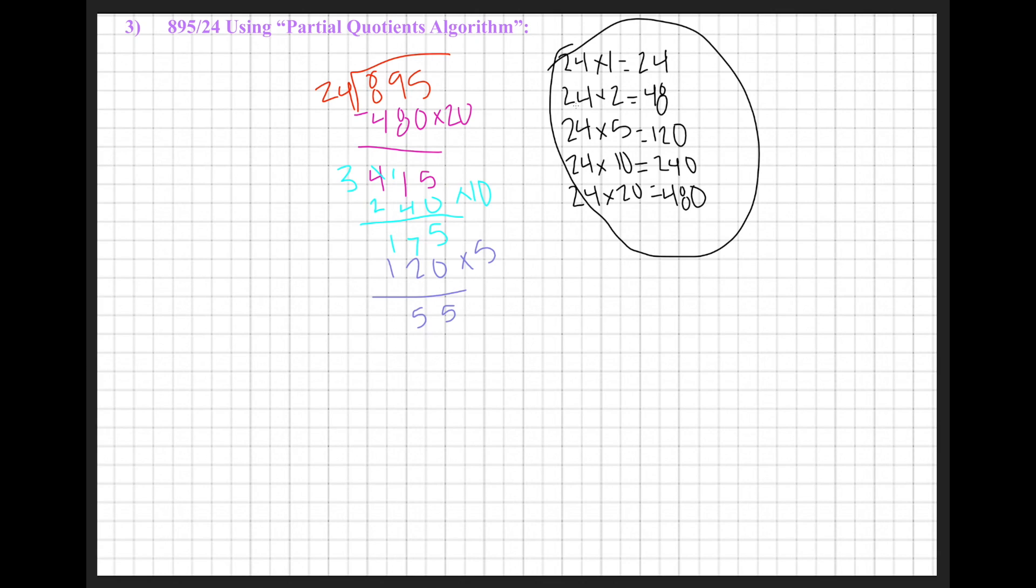I'm now going to look at my multiples that I know. 24 times 2 equals 48. This would be the next biggest number that I can take away from 55 without going into a negative. So 24 times 2 equals 48, and 55 minus 48 is 7.